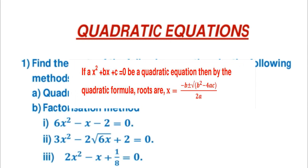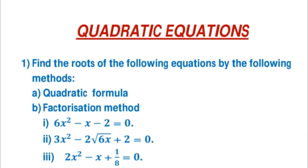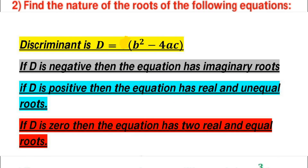Note that for this session, the method of completing the square has been removed from the syllabus. The quadratic formula is x = (−b ± √(b² − 4ac)) / 2a, where b² − 4ac is the discriminant. The discriminant determines the nature of roots: if it equals 0, there are two equal roots; if it is negative, the roots are not real (imaginary); if it is positive, there are two unequal real roots.